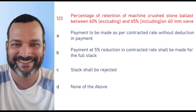When the percentage retention of machine crushed stone ballast is between 60% (excluding) and 65% (including) on the 40 mm sieve, payment at 5% reduction in contractor rate shall be made for the full stock.